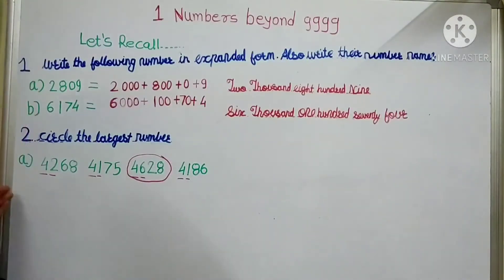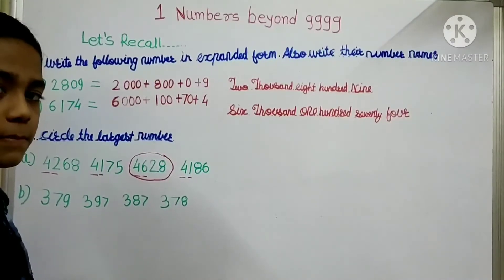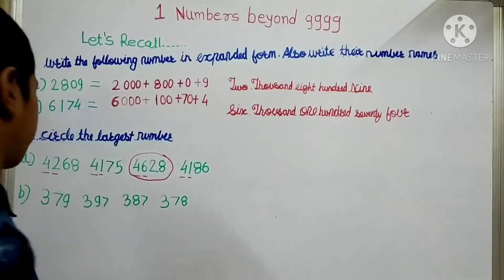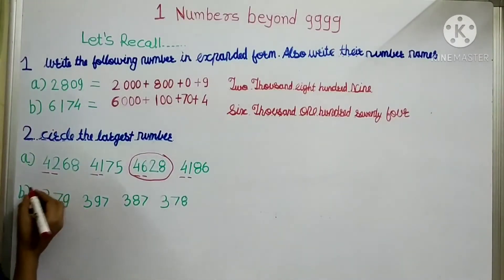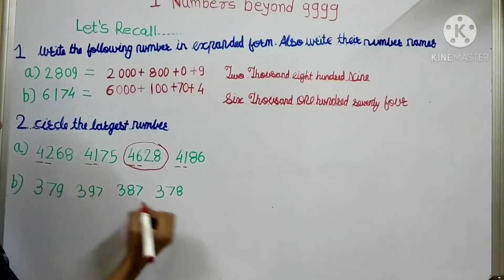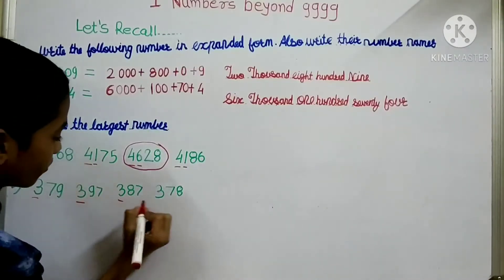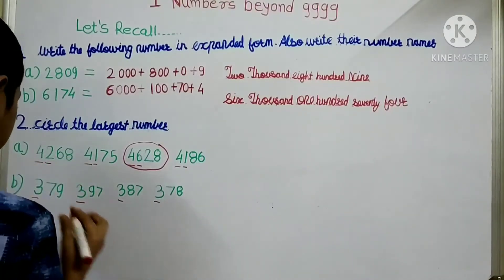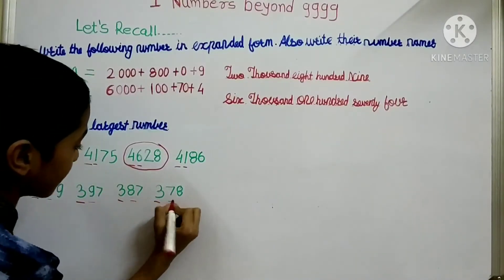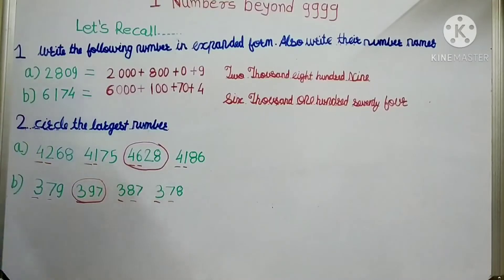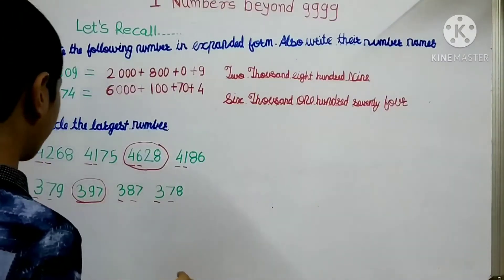Now we will study part B, which has three-digit numbers. Apply the same rule — first check the hundreds place. All are three. Now let's check the tens place: 7, 9, 8, 7. Nine is the biggest, so 397 is the largest number among these.